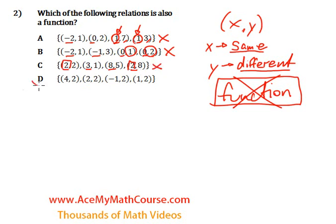By default, we know that D must be a function, but let's confirm. We have x equals 4, 2, negative 1, and 1. That is indeed a function because we have no repeating x values. That's it!